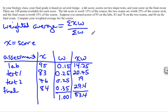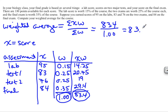And now to find our weighted average, we just take this total here of 83.4 divided by the sum of the weights, which was in this case one. And so your score in this biology class is 83.4.